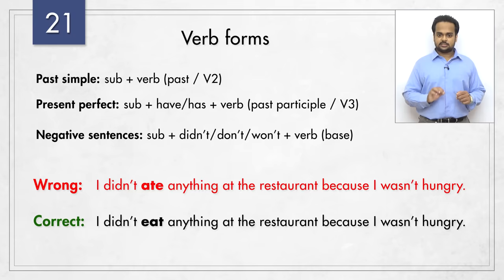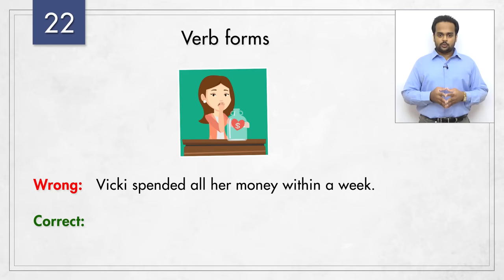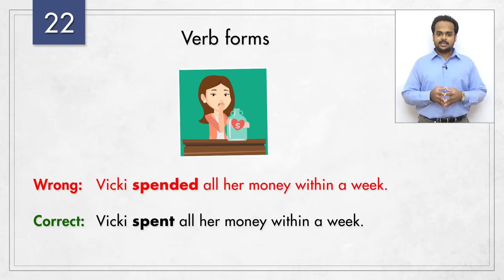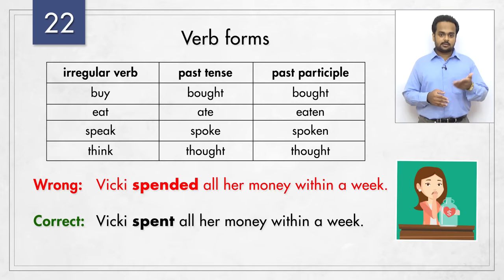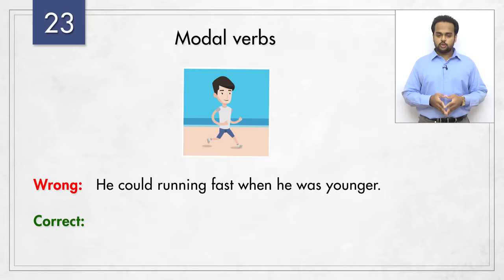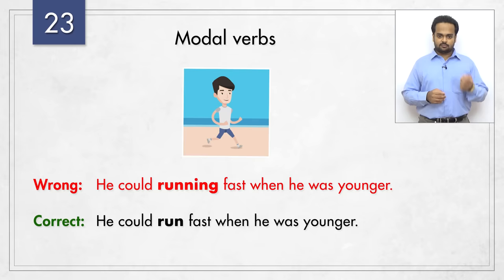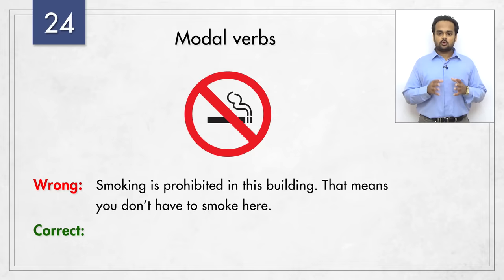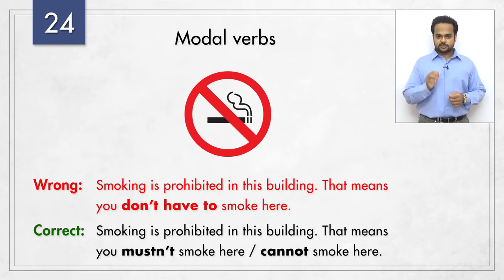Number twenty-two – 'Vicky spended all her money within a week.' Not 'spended' – 'spent.' The verb 'spend' is irregular, meaning the past form does not have an -ed ending. There are many irregular verbs in English like buy, eat, speak, think and so on. You can only learn them through experience, so you should memorize as many as you can. Our next topic is modal verbs. The first sentence – 'he could running fast when he was younger' – should be 'he could run fast when he was younger.' After any modal verb, you should use a verb in its base form. Next: 'smoking is prohibited in this building' means you mustn't smoke here or you cannot smoke here. To say that something is not allowed, you need to use 'mustn't' or 'cannot.'